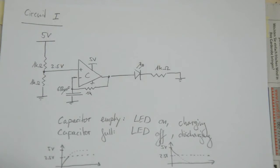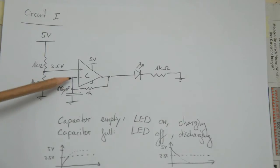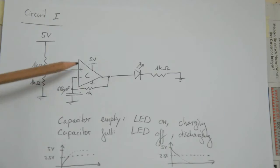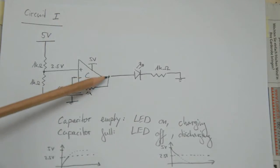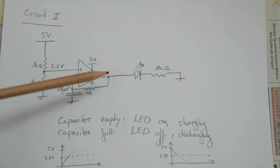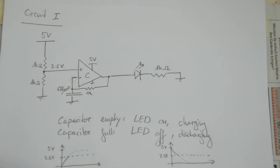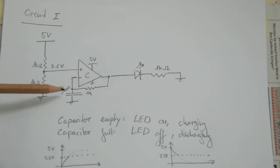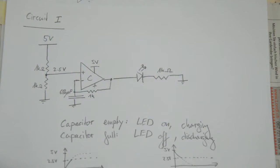During the second stage, the capacitor is being discharged. Assume the capacitor is charged to 5 volts, which means 5 volts is applied to the inverting input. Because 5 volts is larger than the 2.5 volts on the non-inverting input, the comparator outputs a logic low — the output sits at 0 volts. The LED is off, and the output of the comparator can sink current because essentially the output is shorted to ground. Because of this ground, the capacitor can be discharged through the 1K resistor.